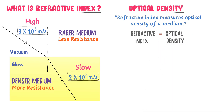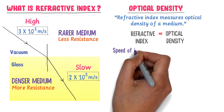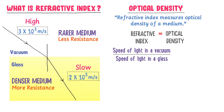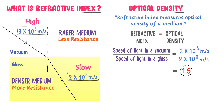For example, to find how much the speed of light slows down in glass with respect to vacuum, we find the ratio of the speed of light in vacuum to the speed of light in glass. Speed of light in vacuum divided by speed of light in glass: 3×10⁸ m/s divided by 2×10⁸ m/s. After calculation, we get 1.5.